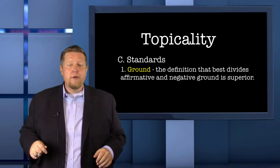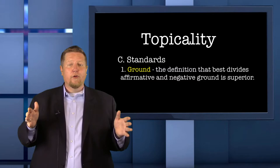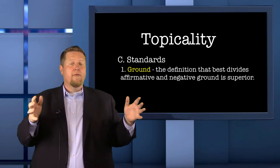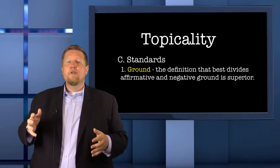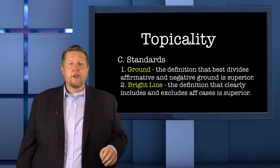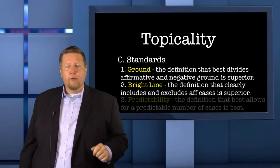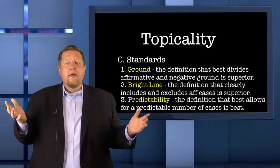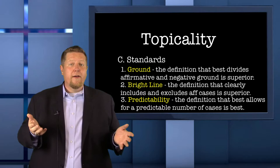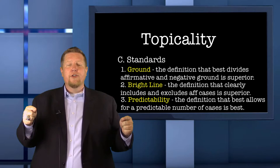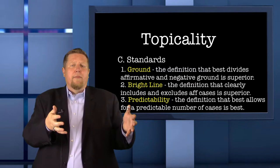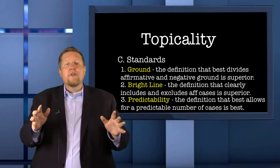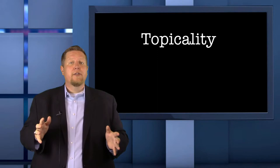There are dozens of topicality standards, but we'll just talk about the three most common. The first standard is ground — the negative team will want the judge to evaluate which definition more equally divides ground between the negative and affirmative teams. A definition that allows for thousands of affirmative plans probably allows too much affirmative ground, and one that allows for only three or four plans probably allows too much negative ground. The second standard is bright line, meaning the best definition will contain clear language that clearly excludes and includes specific affirmative plans. The third standard is predictability, which asks the judge to choose the definition that best supports a predictable number of cases. Negative teams should look closely at their definition and choose standards that match it.